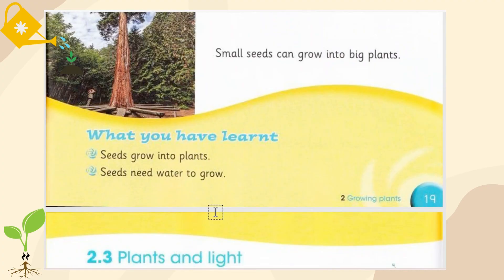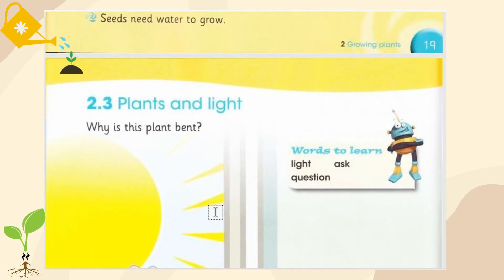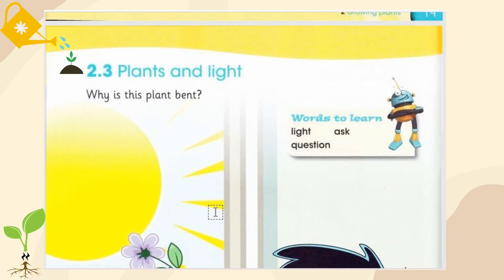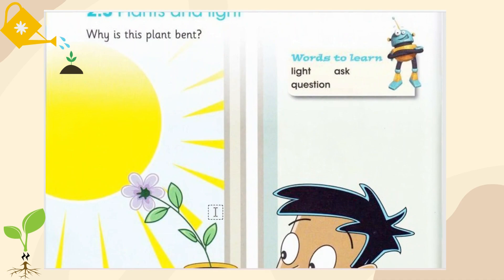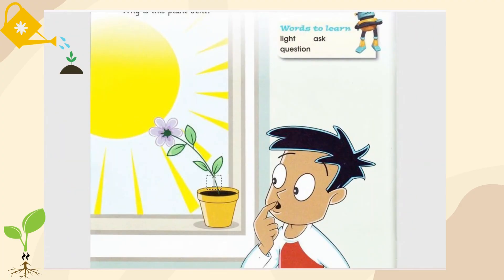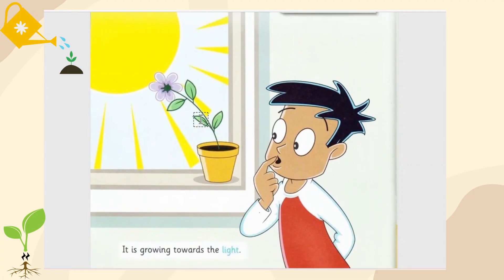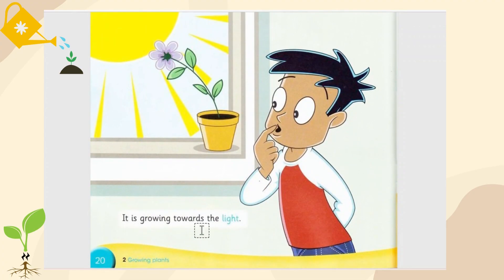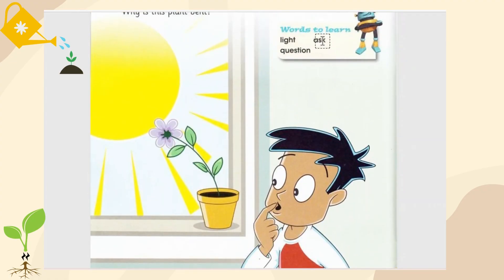There is one more thing that seeds need. We look at plants and light. Why is this plant bent? The plant is bent towards the sunlight — it is growing towards the light. So plants need water and light to grow. The words to learn are: light — l-i-g-h-t; ask — a-s-k; question — q-u-e-s-t-i-o-n.